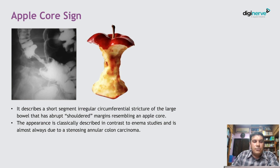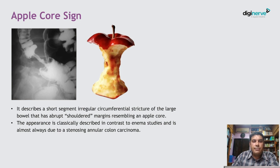There is a term called the apple core sign. It is called so because the short segment irregular circumferential stricture of the large bowel with abrupt shoulder margins resembles an apple core. This is almost always due to a stenosing annular colon carcinoma.